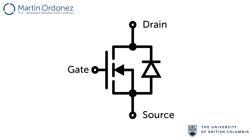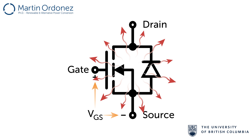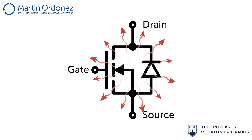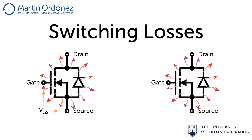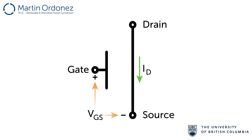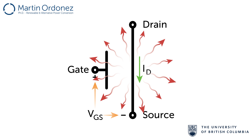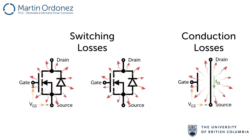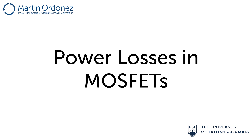Every time a MOSFET is turned on, some energy is dissipated in the process. The same occurs when the device is turned off. These are called switching losses. Whenever the MOSFET is on and conducting current, there are losses called conduction losses. Today, we will look at the behavior of both these losses and see how to determine the total power losses in a MOSFET.